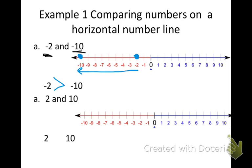Now I want to compare some positive numbers — I'll compare two and ten. I'm going to the right, and when we move to the right, our numbers get larger. I'm going to point at the smaller number. Notice this is kind of opposite when you have negative signs — negative two is actually a bigger number than negative ten. But when we have positives, ten is definitely bigger than two. If you need to copy this down, pause the video.